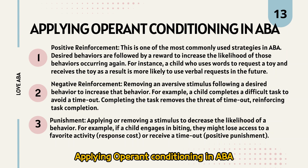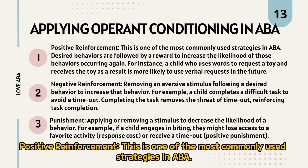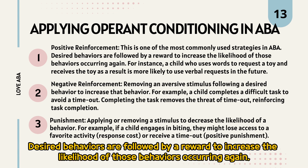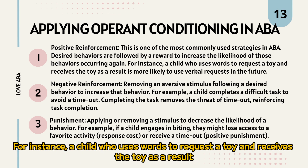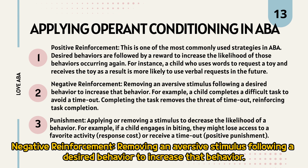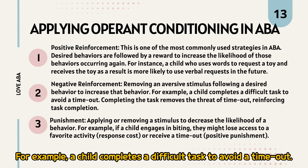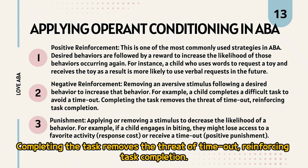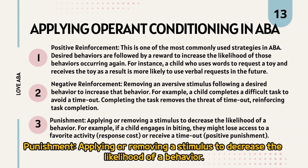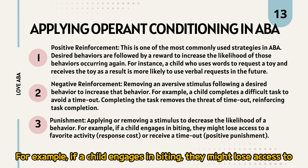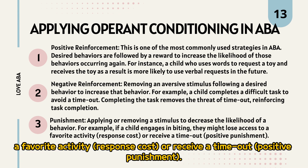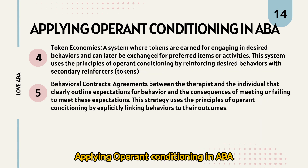Applying operant conditioning in ABA — Positive reinforcement: This is one of the most commonly used strategies in ABA. Desired behaviors are followed by a reward to increase the likelihood of those behaviors occurring again. For instance, a child who uses words to request a toy and receives the toy as a result is more likely to use verbal requests in the future. Negative reinforcement: Removing an aversive stimulus following a desired behavior to increase that behavior. For example, a child completes a difficult task to avoid a timeout — completing the task removes the threat of timeout, reinforcing task completion. Punishment: Applying or removing a stimulus to decrease the likelihood of a behavior. For example, if a child engages in biting, they might lose access to a favorite activity (response cost) or receive a timeout (positive punishment).